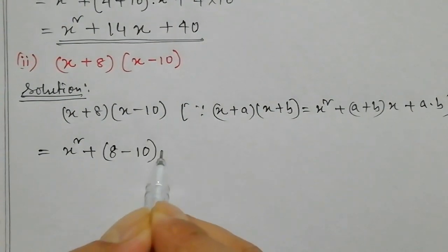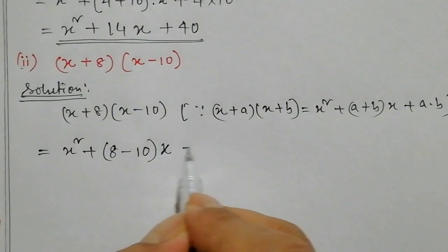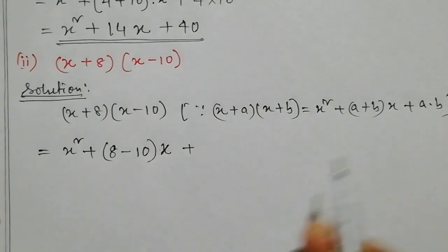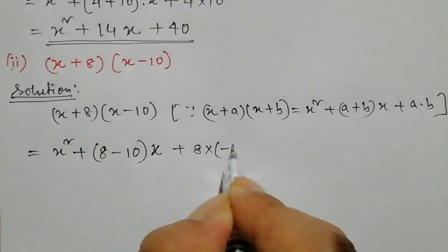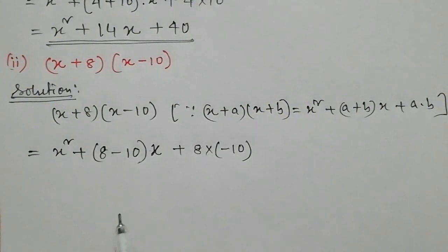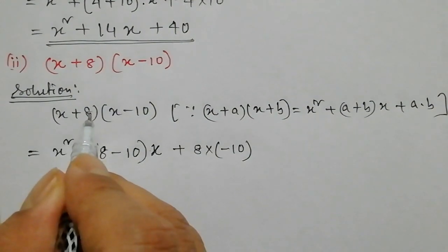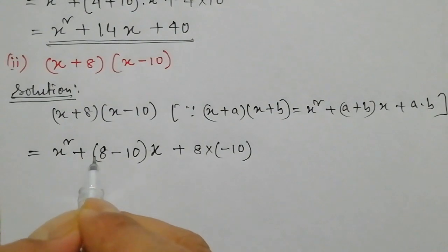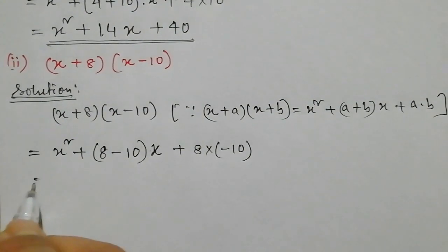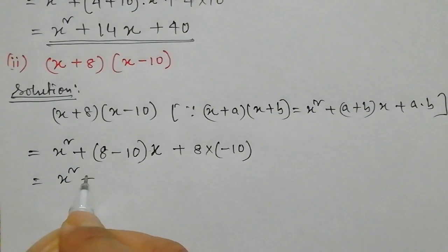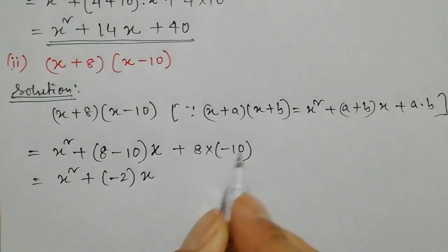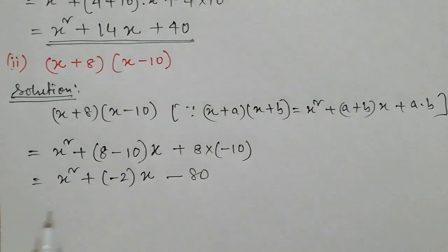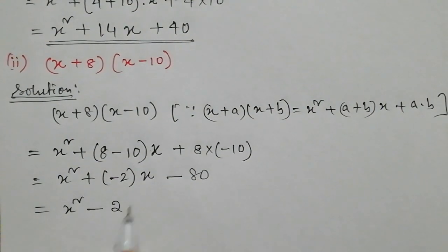This is minus 2, this is minus 10, and this is x squared into x plus a into b. b is equal to a, so a is equal to 8, and b is minus 10. Minus 2 is equal to minus 2, which we have to write. So x squared plus minus 2, and x squared plus 8 into minus 10, plus minus 10, so minus 10.